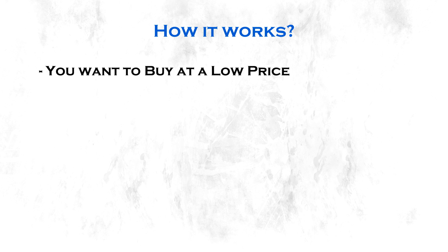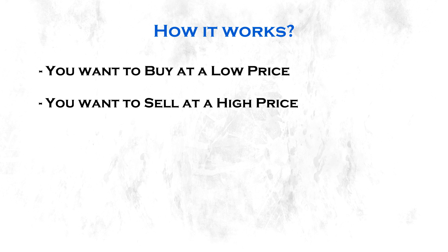Whenever you want to buy something you want to buy it at a low price when it's cheap, and whenever you want to sell something you want to sell it at a high price when the value is high. So when you think the price goes up, you buy. Whenever you think the price goes down, you sell. No one will ever know for fact what price will do, so you have to have a way to control risk.